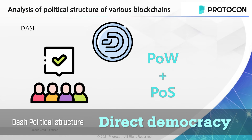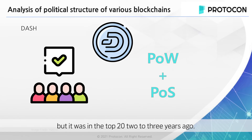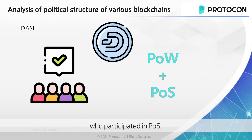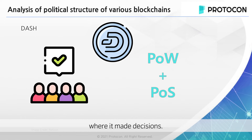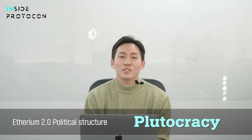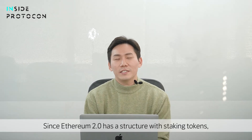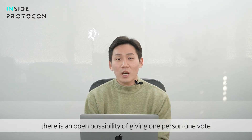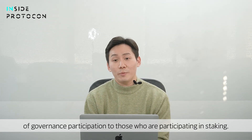The project called Dash is now less recognized, but it was in the top 20 two to three years ago. In this project, a POS structure was mixed with POW. Direct democracy was realized in the form of giving governance authority to those who participate in POS. Dash introduced a policy called Masternode where it made decisions. Ethereum 2.0 has yet to talk about explicit governance. Since Ethereum has a structure with staking tokens, there is an open possibility of giving one token, one vote of governance participation to those who are participating in staking.